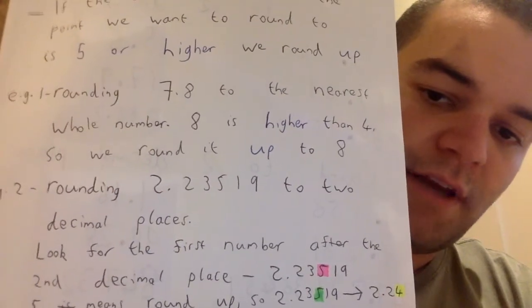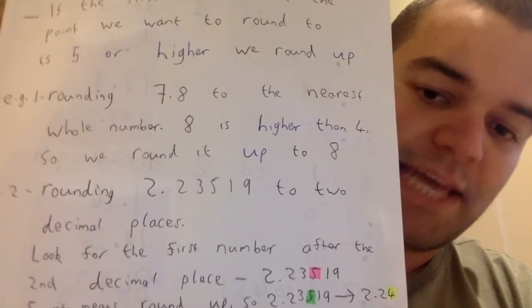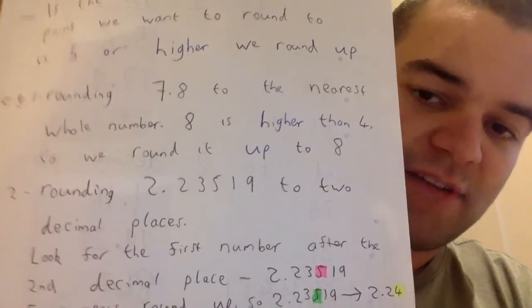If we imagine that the number where the 5 is was a 3, we'd keep it as 2.23 because we'd be rounding down.